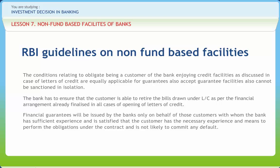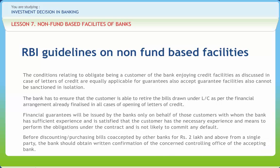Banks should not normally issue guarantees for customers that enjoy credit facilities with other banks. Limits of co-acceptance of bills will be sanctioned only after detailed appraisal of the customer's requirement and the bank is fully satisfied about the genuineness of the need. Such limits should be extended to customers who enjoy other limits with the bank. Before discounting or purchasing bills co-accepted by other banks for Rs. 2 lakh and above from a single party, the bank should obtain written confirmation from the concerned controlling office of the accepting bank. Where banks open LC and also co-accept bills drawn under such LC, discounting banks must ascertain the reason for co-acceptance and satisfy themselves about the genuineness of the transaction. Co-acceptance facilities will normally not be sanctioned to customers enjoying credit limits with other banks.